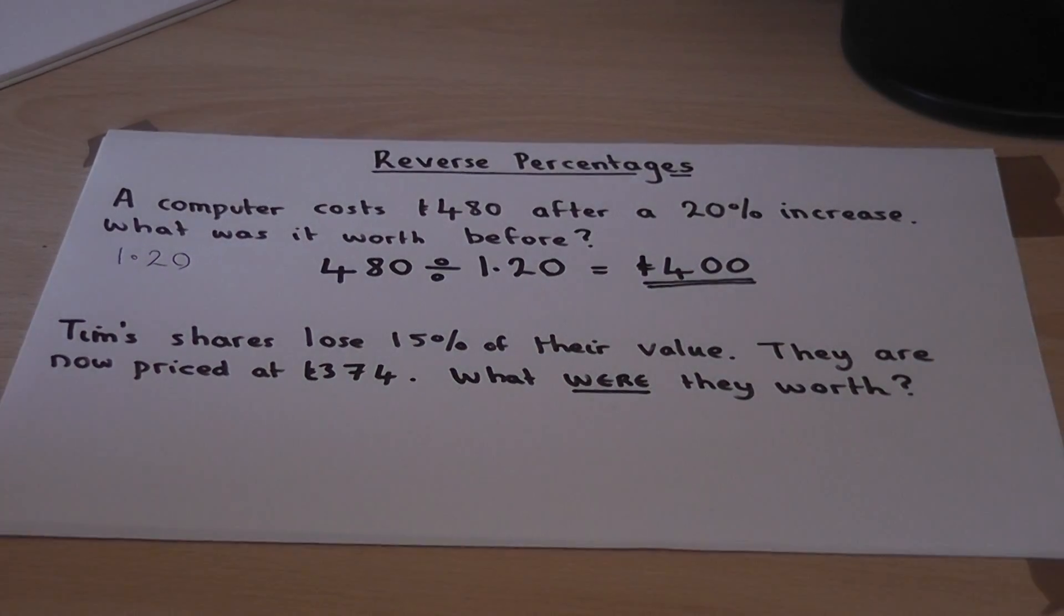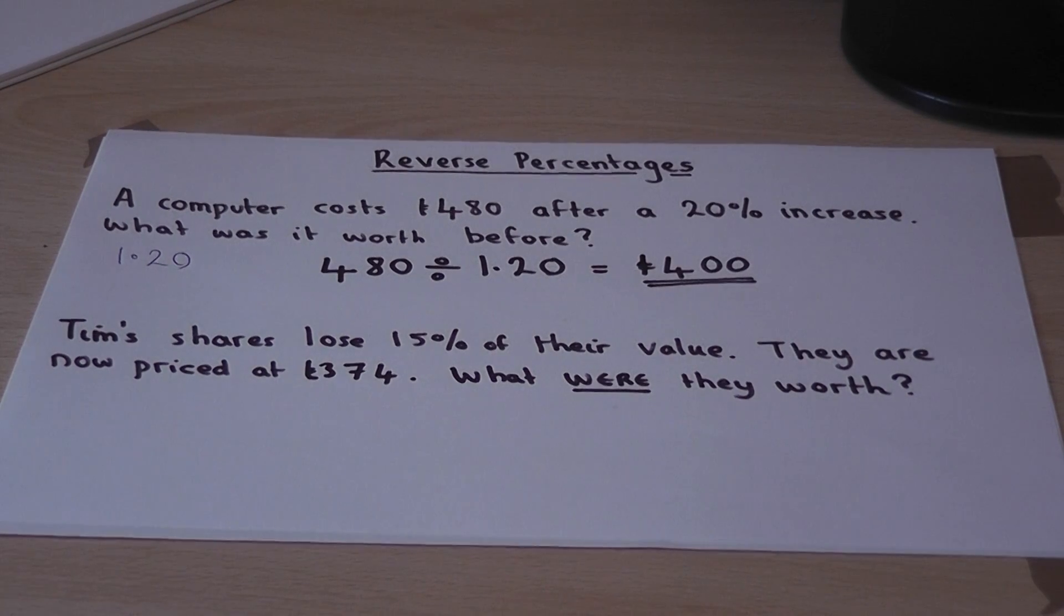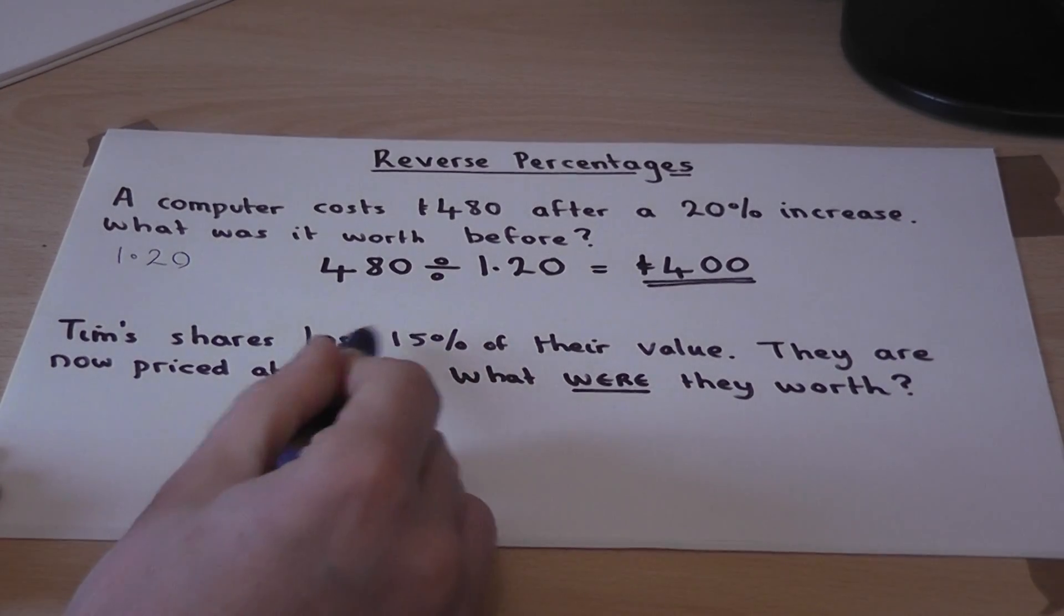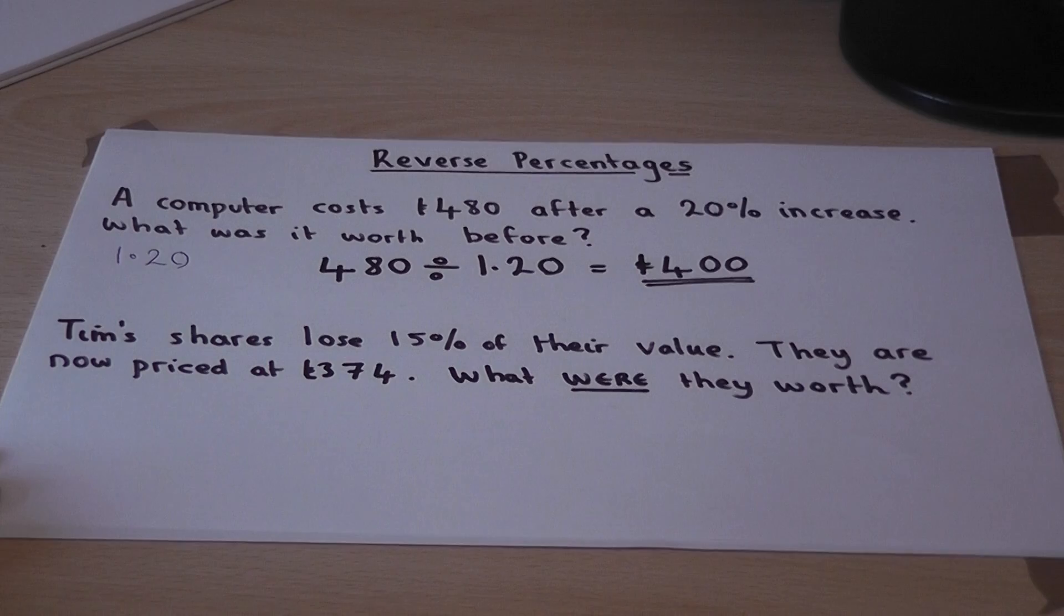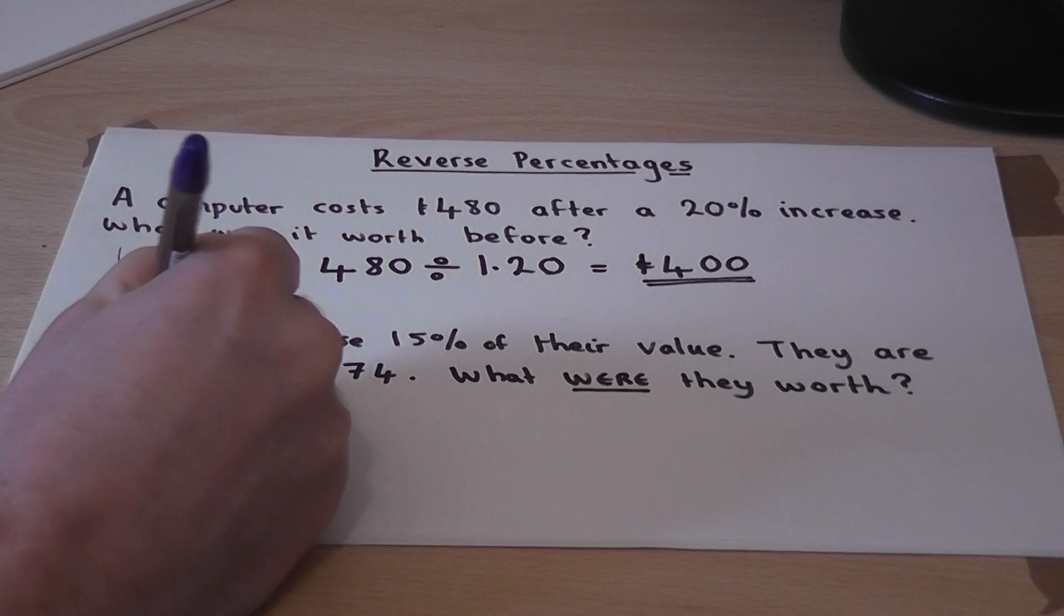In the second example, suppose we know there's been a reduction, a loss of 15%. We know a loss of 15% is equivalent to 0.85.